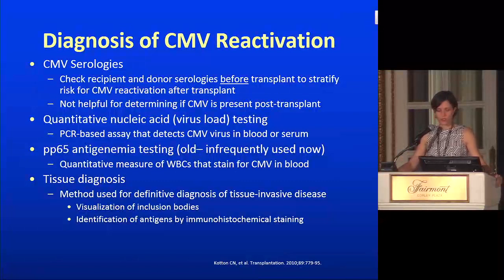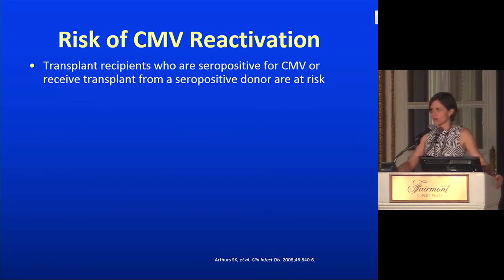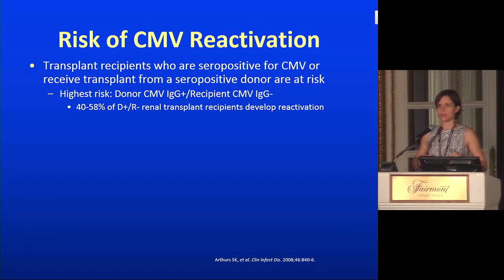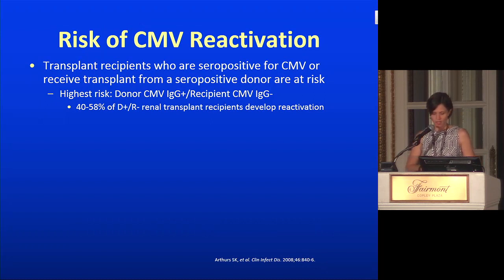Tissue diagnosis is the main way to diagnose tissue-invasive disease like our case patient — you need to visualize inclusion bodies or detect by antigens with immunohistochemical staining. Transplant recipients who are seropositive for CMV or who receive a transplant from a seropositive donor are at risk. The highest risk is donor-positive, recipient-negative — you're taking someone who has never had CMV, giving them induction immunosuppression, and putting in an organ that has an infection in it. 40 to 58% of D+ R- renal transplant patients will develop reactivation in the absence of prophylaxis.